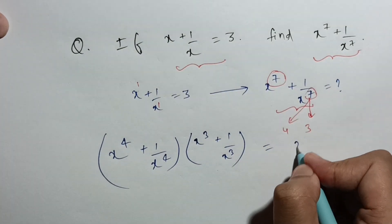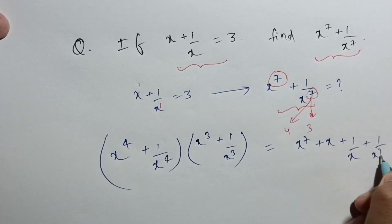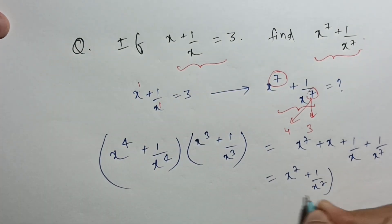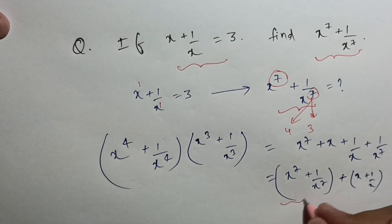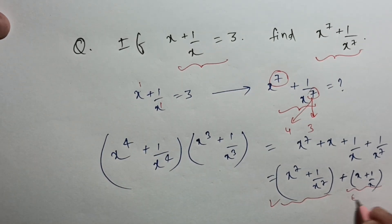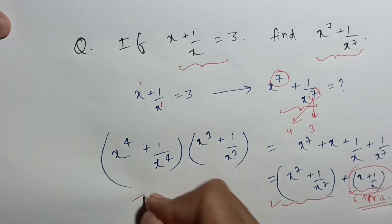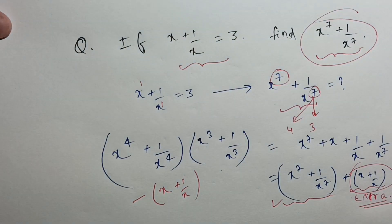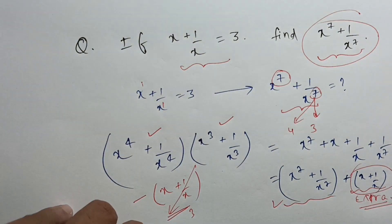If I multiply this, I get x raised power 7 plus x plus 1 by x plus 1 upon x raised power 7. Rearranging, that is x raised power 7 plus 1 upon x raised power 7, plus x plus 1 by x. I want only the 7th power part, but I am getting x plus 1 by x as extra. So I can subtract that part — since x plus 1 by x is already 3, I will simply subtract 3.